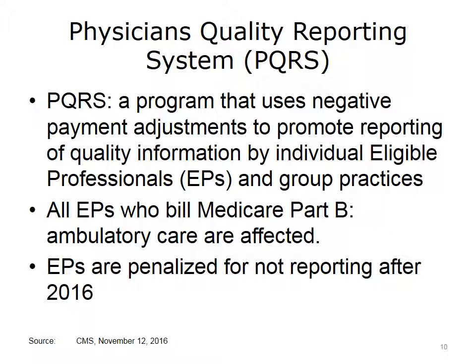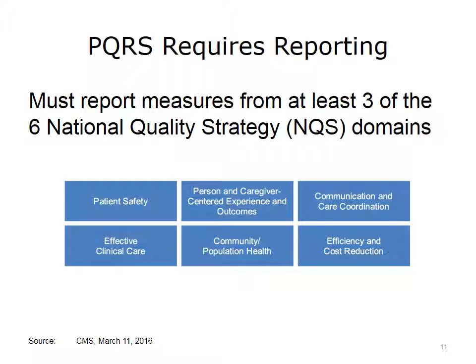There is some overlap between the PQRS and MU definitions of EP, but there are some PQRS EPs who are not MU EPs. Beginning in 2016, EPs automatically are penalized for not doing PQRS reporting. Starting in 2017, PQRS will merge into MIPS. Currently, all EPs must report on nine measures from at least three of the six National Quality Strategy, or NQS, domains. The PQRS measures consist of either process improvement measures or healthcare outcomes measures within these strategies.